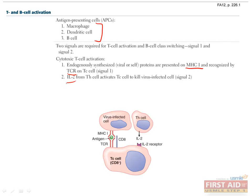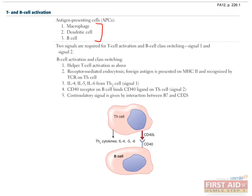B cell class switching also requires two signals. Th2 cells produce either IL-4, IL-5, or IL-6 in response to antigen exposure. When B cells are acted upon by any of these cytokines, this is signal one. Signal two is the interaction between the CD40 receptor on the B cell and the CD40 ligand on T helper cells. Generally, the helper T cell activating a B cell was itself just activated by that same B cell, since B cells act as antigen presenting cells. Here it's worth bringing up the topic of anergy, which describes the phenomenon whereby self-reactive T cells are rendered non-reactive due to the fact that they are not exposed to the appropriate co-stimulatory molecule.